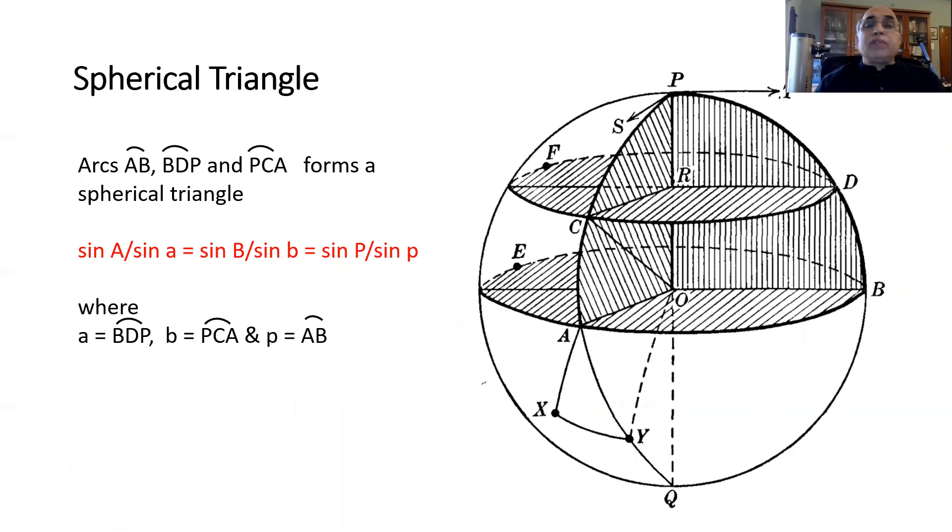We can construct spherical triangles using these great circles. For example, in this picture we have here a great circle made up of arcs AB, BDP, and PCA. This forms a spherical triangle.